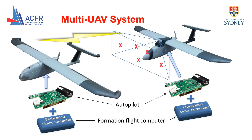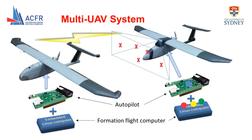The follower's formation flight computer receives sensor data from the leader's autopilot wirelessly, sensor data from the local autopilot, and pixel locations of all the observed infrared markers from the camera. The outputs are bank angle, altitude, and airspeed commands that are sent back to the follower's autopilot. Any embedded processing hardware can be used as the formation flight computer, provided the appropriate interfaces exist and the computational power is sufficient.